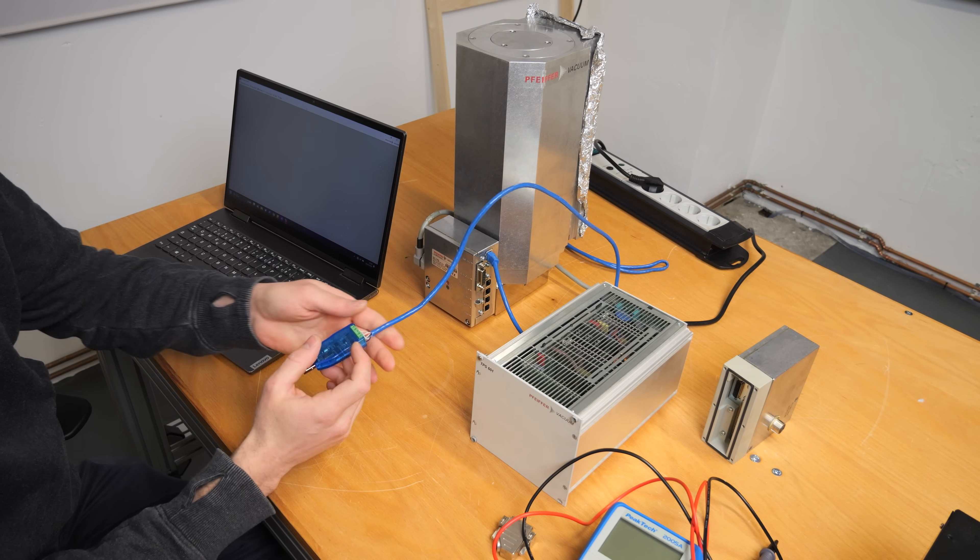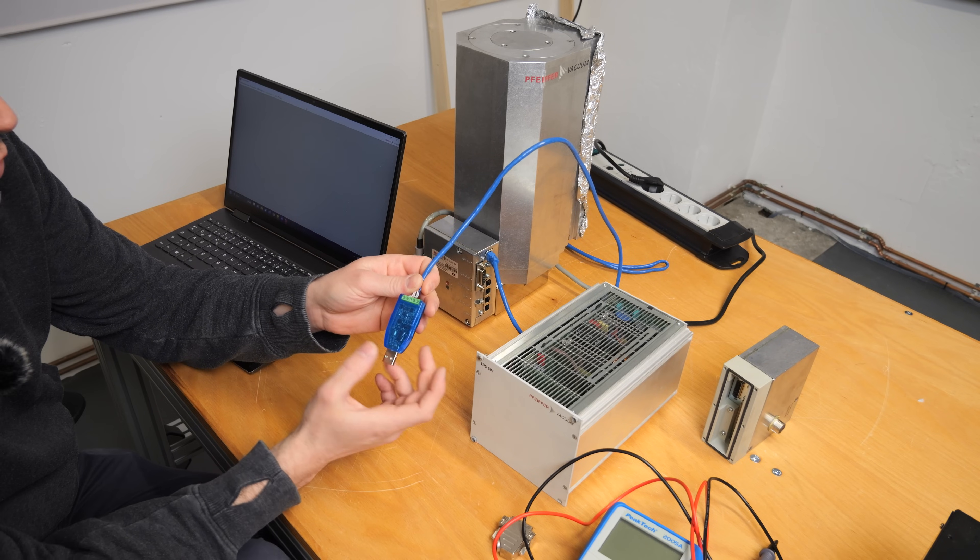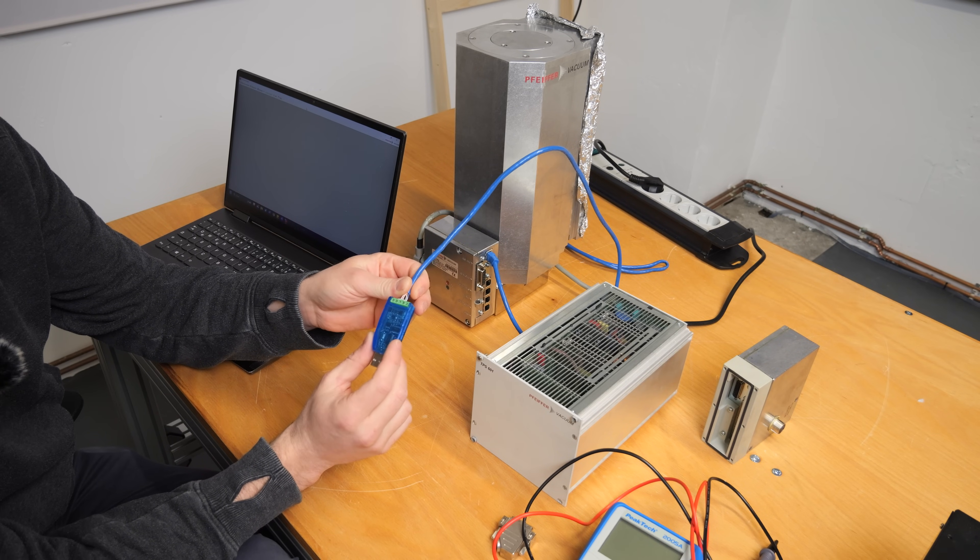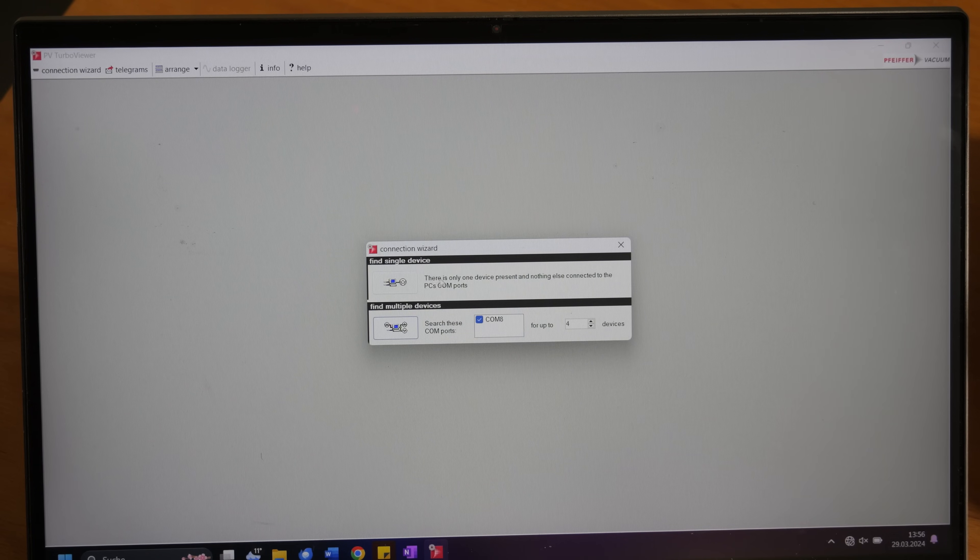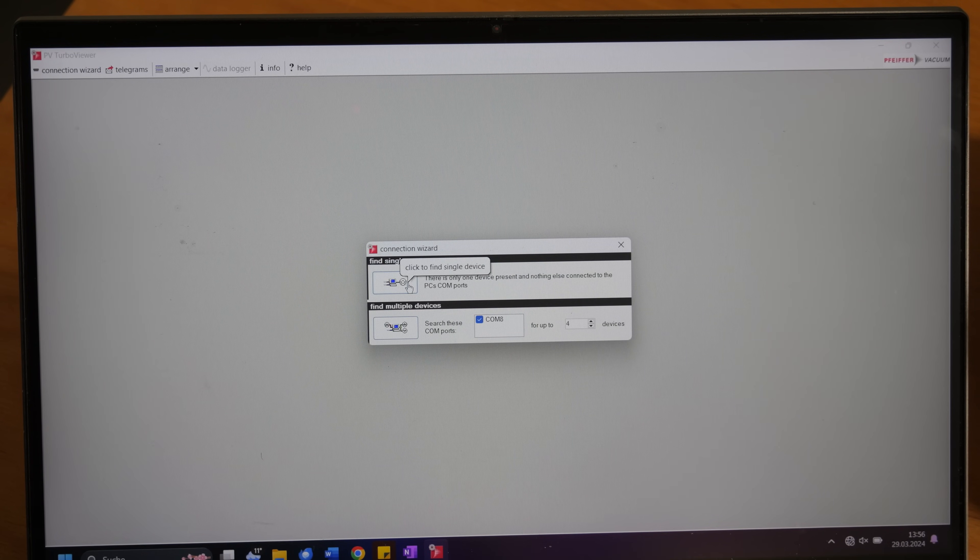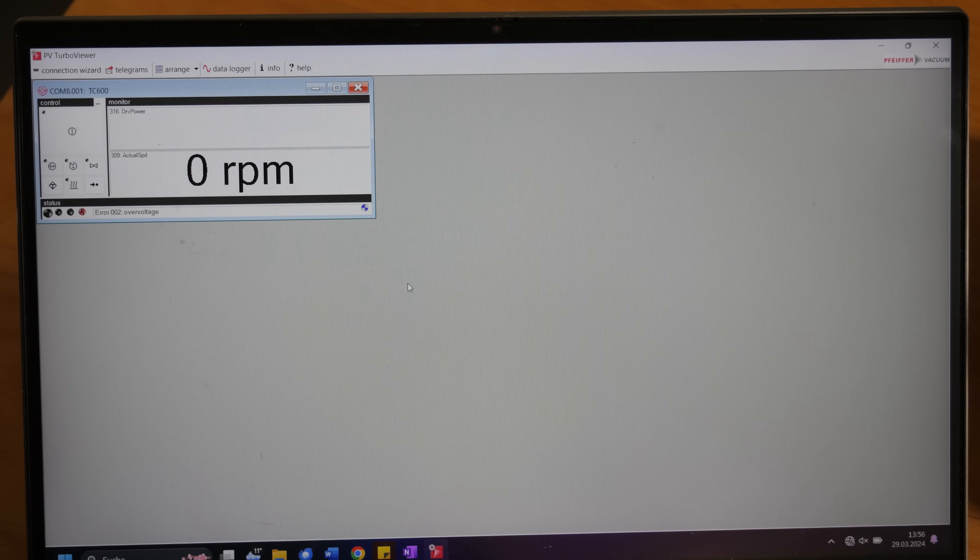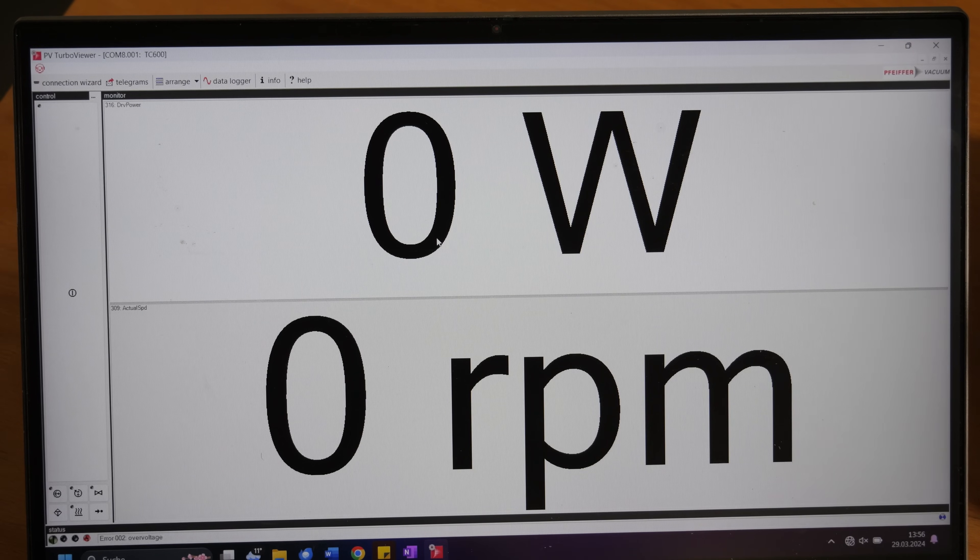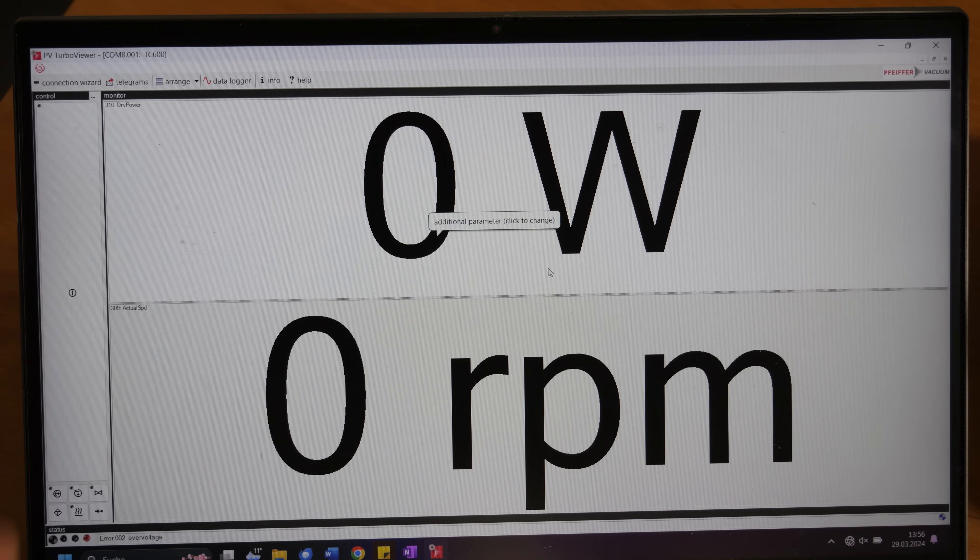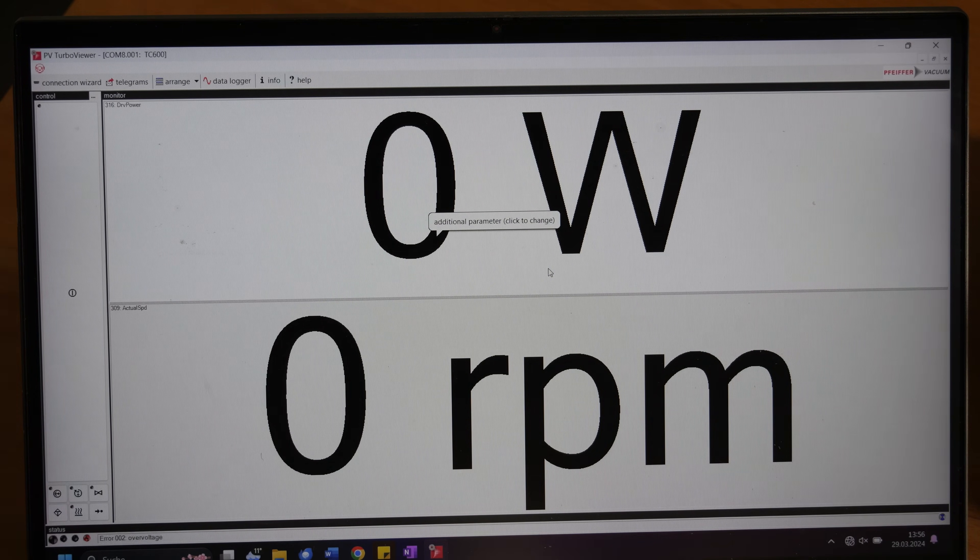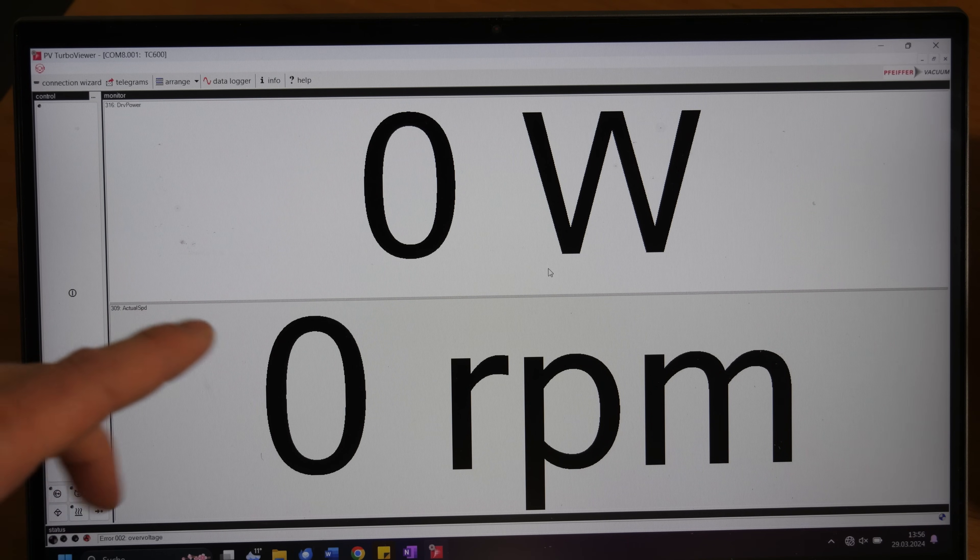So I connected the pump to my computer via an RS485 to USB adapter and attempted to connect the software to the pump. Using the software, I can now use the connection wizard to look for the device which is connected to the PC. And as you can see, it found the device. The thing is that it's not only a cool software to read out the error code, I'm probably using it to control the pump in the end if I get it to work.